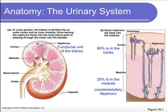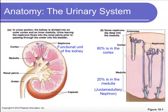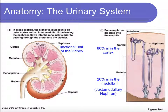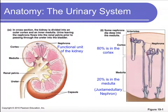Here's a blow-up of our nephrons — two shown here. Most of the nephron is in the cortex, about 80%, and about 20% dips down into the medulla. Whatever urine we produce in the nephron will go to the renal pelvis, then to the ureter, to the bladder, and out the urethra.